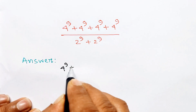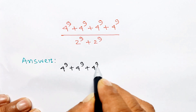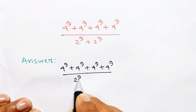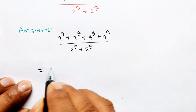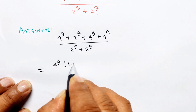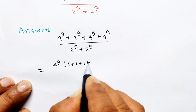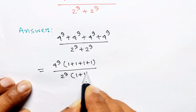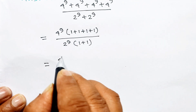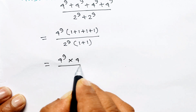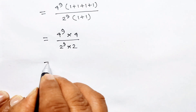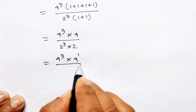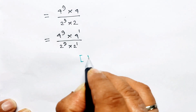4 to the power 9 plus 4 to the power 9 plus 4 to the power 9 plus 4 to the power 9, divided by 2 to the power 9 plus 2 to the power 9, equals 4 to the power 9 common, then 1 plus 1 plus 1 plus 1, divided by 2 to the power 9 common, then 1 plus 1, equals 4 to the power 9 into 4, divided by 2 to the power 9 into 2, which equals 4 to the power 9 into 4 to the power 1, divided by 2 to the power 9 into 2 to the power 1. Product rule.